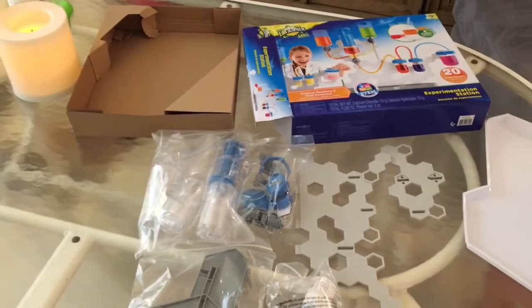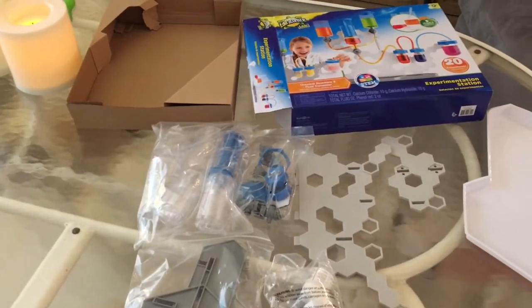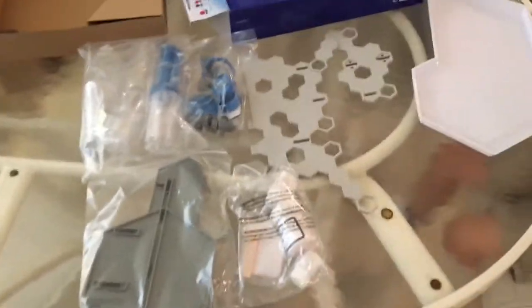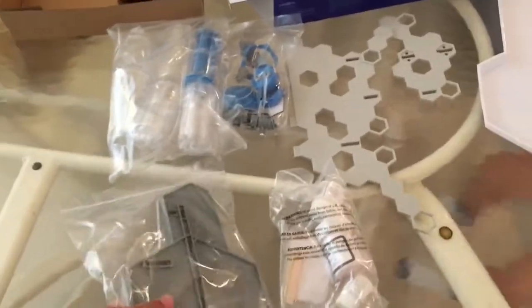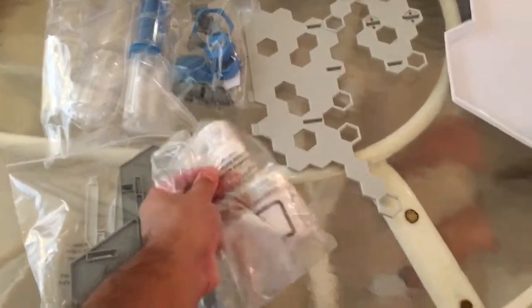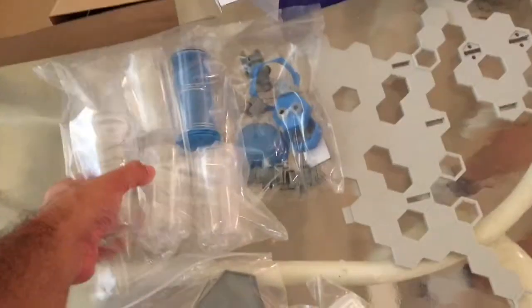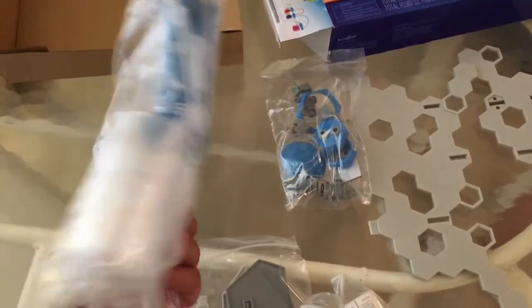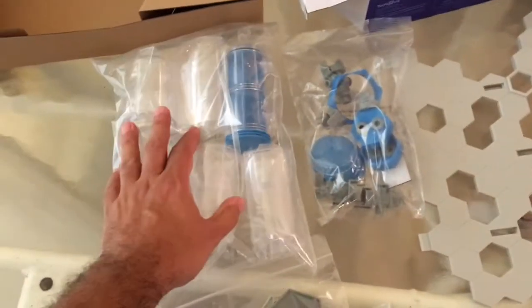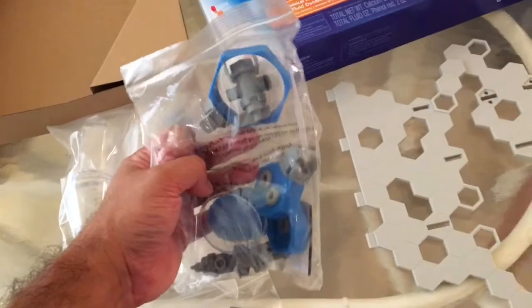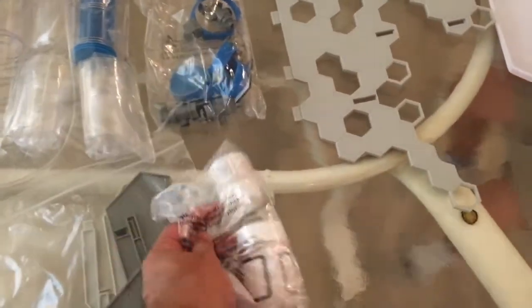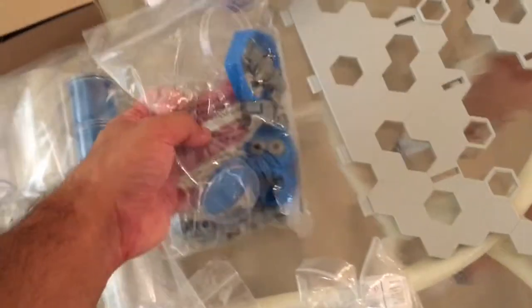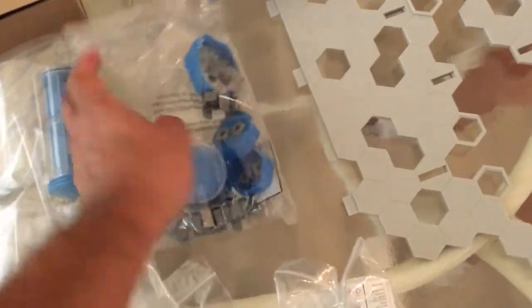So here's everything that's inside of the Edu Science Lab 20 experiment experimentation set. As you can see, it has these four plastic baggies with mixtures and plastic parts, these tubes and cylinders where you can put the fluids and the chemicals. But where are the fluids? The fluids you might have to probably mix some of these with water, and you have more contraptions there.